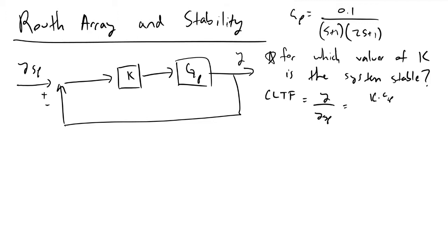divided by 1 plus the product of all the transfer functions we have present, which is just K and GP.